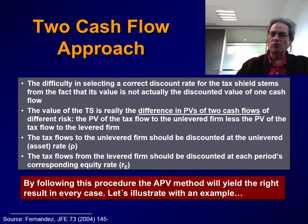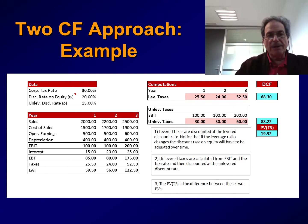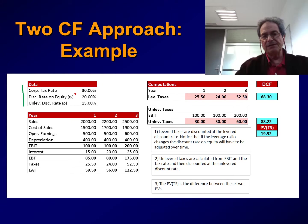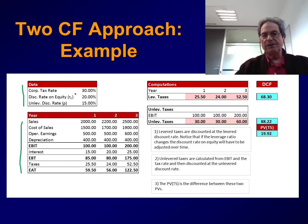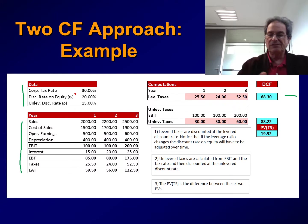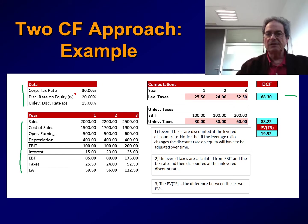Let's illustrate with an example this two cash flow approach. Imagine we have a company with the following data: the corporate tax rate is 30%, the discount rate on equity RE is assumed to be constant at 20%, and an unlevered discount rate rho of 15%. We have pro forma balance sheets with all items for the next three years. To calculate the tax shield, we start with levered taxes. Levered taxes taken from the table are 25.50, 24, and 52.50 during these next three years, coming from the pro forma balance sheets. We discount these to present value using the discount rate on equity, assumed constant, and obtain a present value for the levered taxes of 68.30.